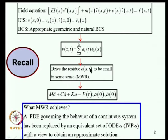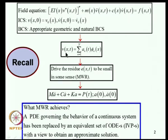This class of methods is known as the method of weighted residuals. They lead to a discretized set of equations where A is an N×1 vector, M, C, K are all N×N matrices, and P is a generalized force which is N×1. We also discussed how to obtain initial conditions A and A-dot at time zero in terms of specified initial displacement profile and velocity profile.